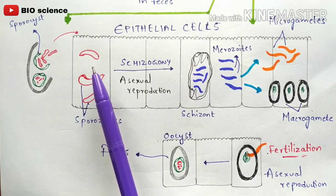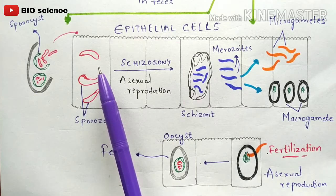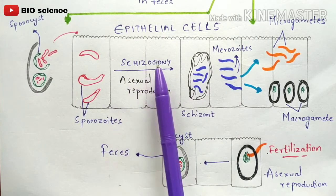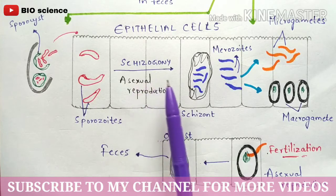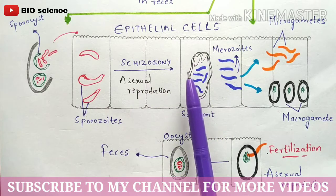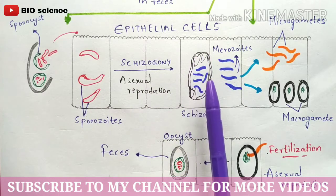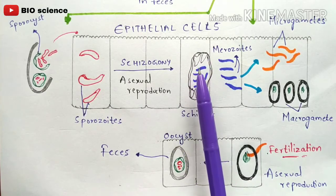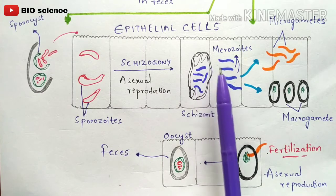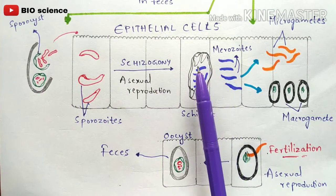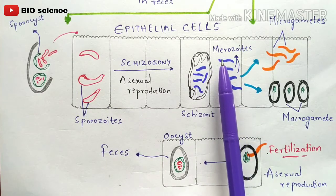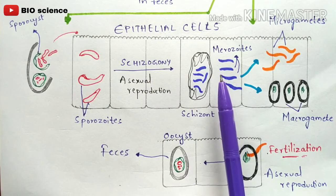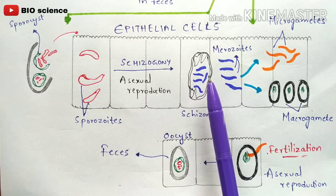The sporozoites which have entered the epithelial cells undergo asexual reproduction through a process called schizogony. Through schizogony, they develop completely into a schizont. Inside the schizont, merozoites are present, and once the schizont ruptures, the merozoites inside are released.